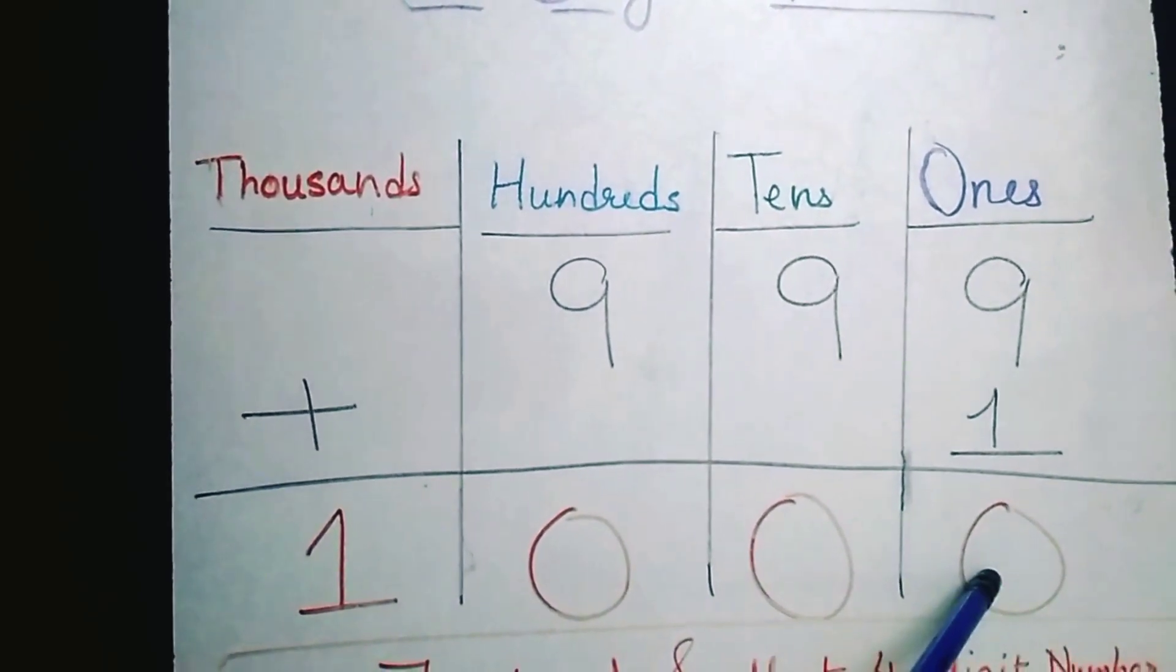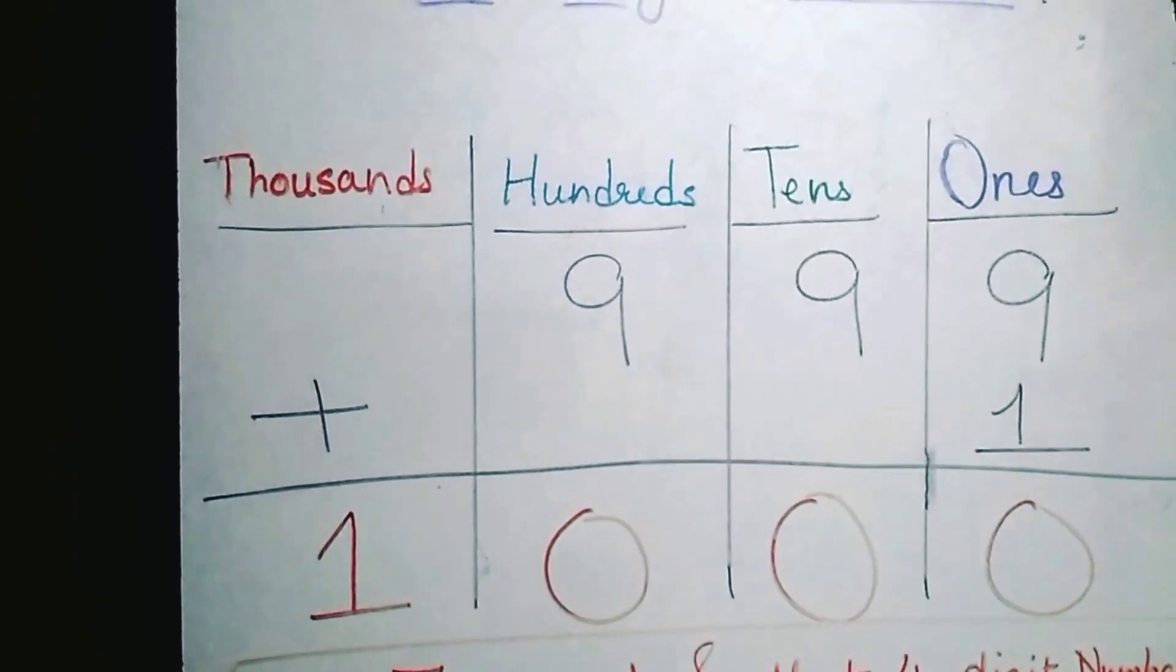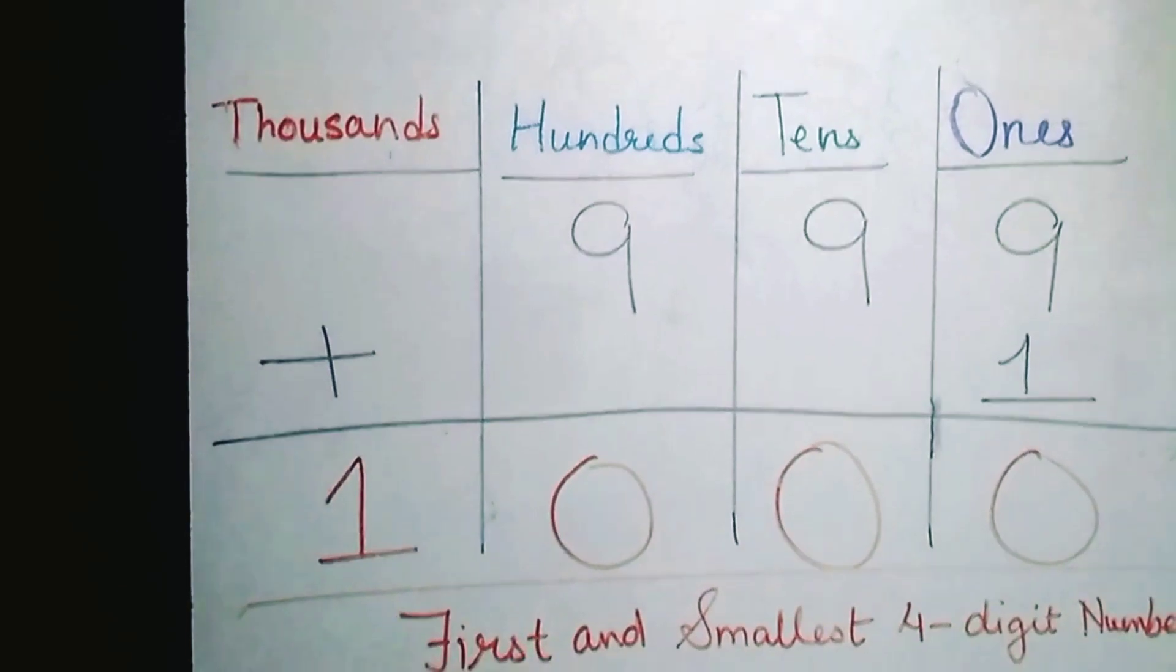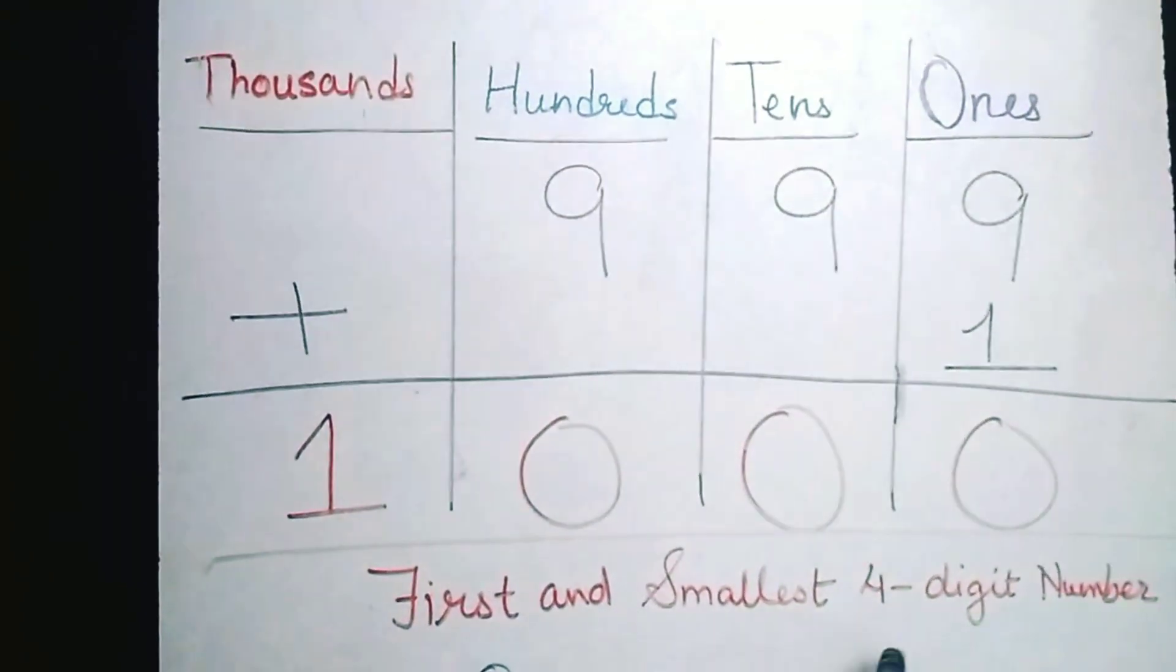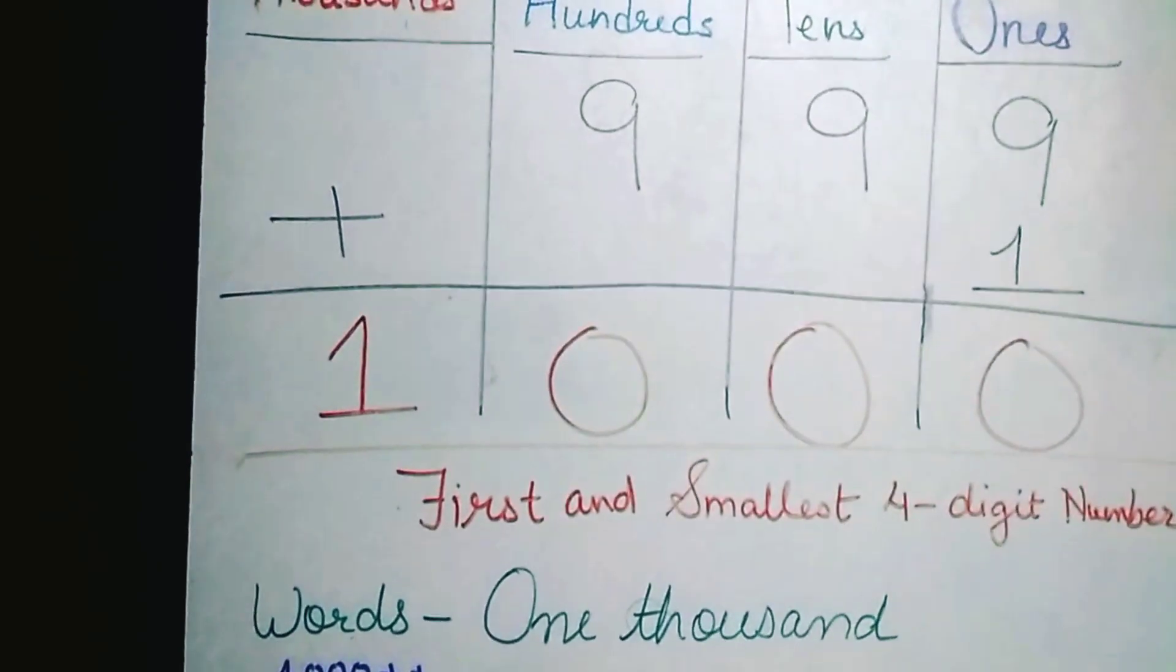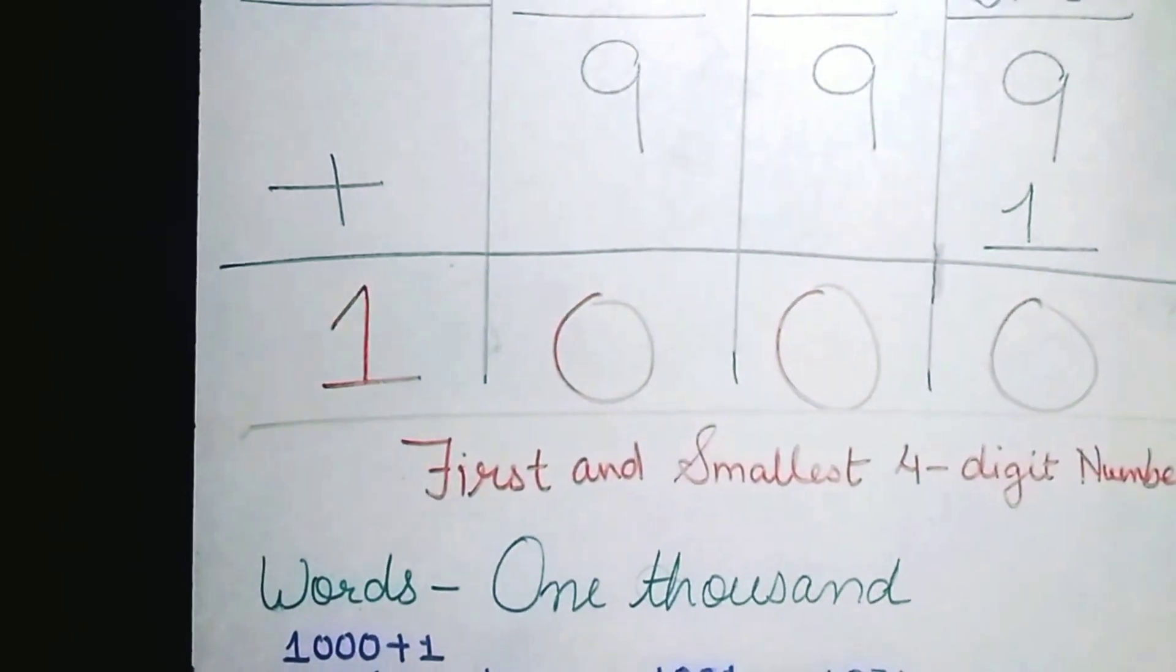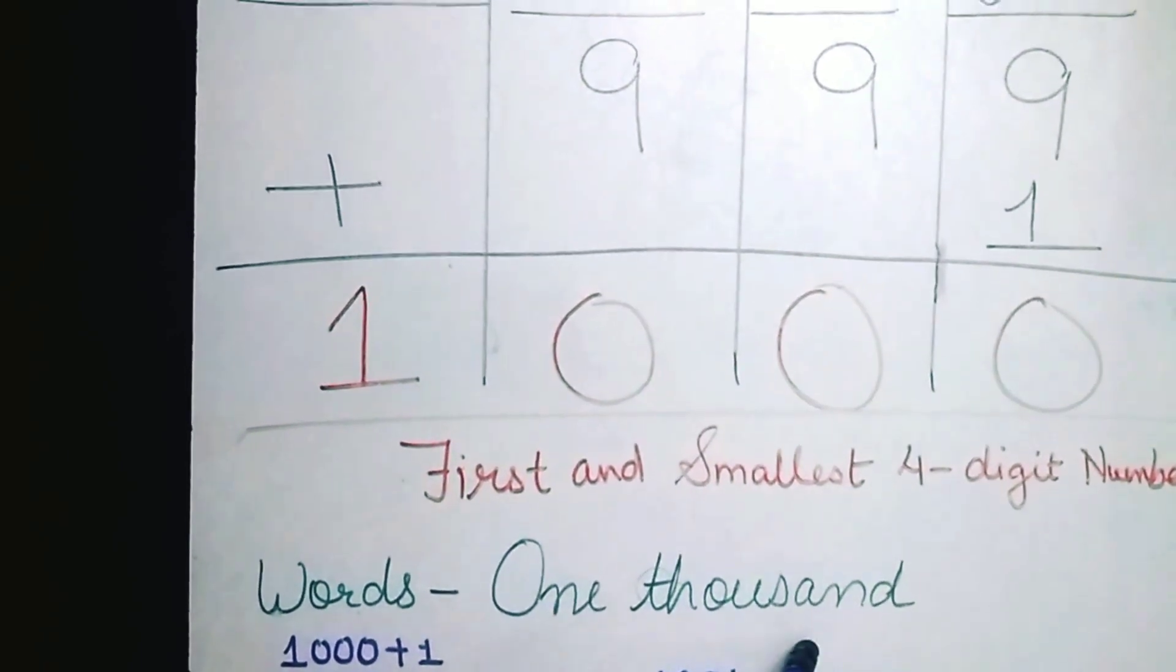Now this is called 1000. This is the first and the smallest four-digit number. In words you write it as 1000, T-H-O-U-S-A-N-D, 1000.